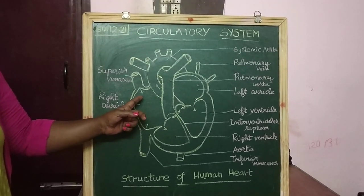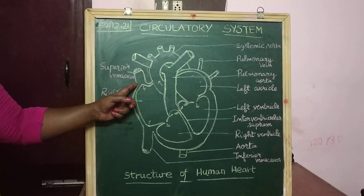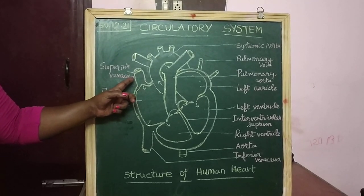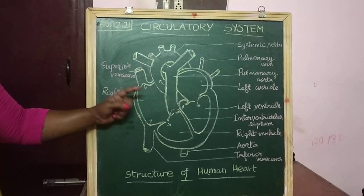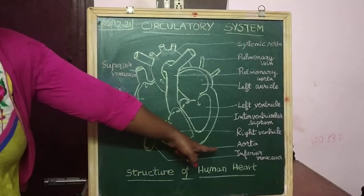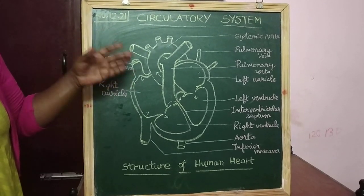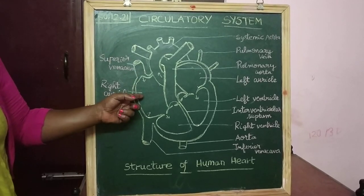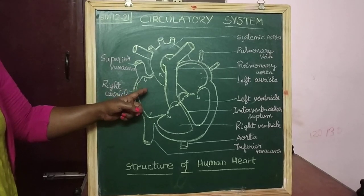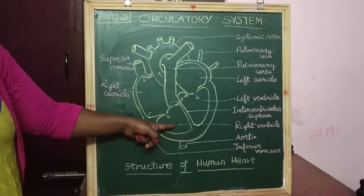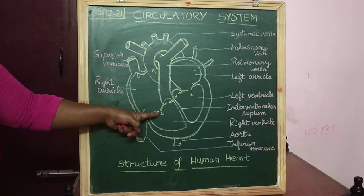The right atrium receives deoxygenated blood from the superior vena cava, which drains blood from the veins of upper organs and arms. The right atrium also receives blood from the veins of lower organs via the inferior vena cava. In addition, the right atrium receives blood from the coronary sinus, which drains the deoxygenated blood from the heart itself.